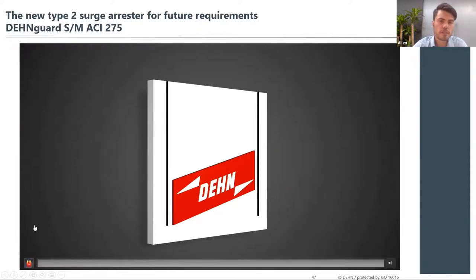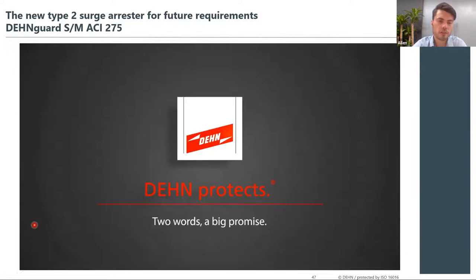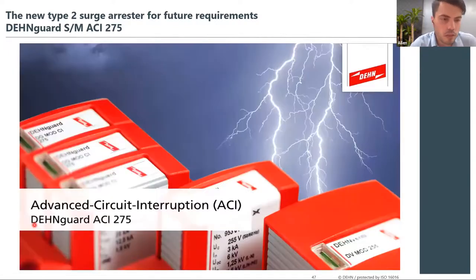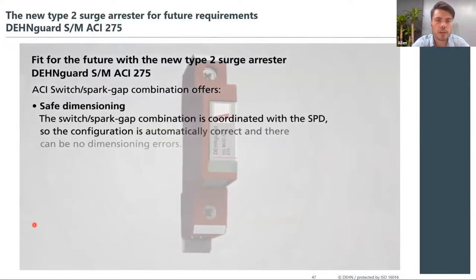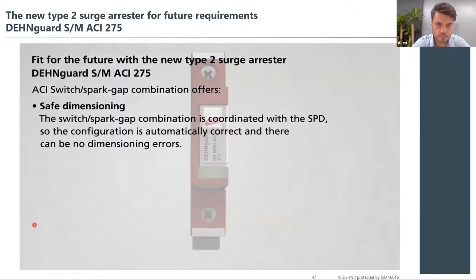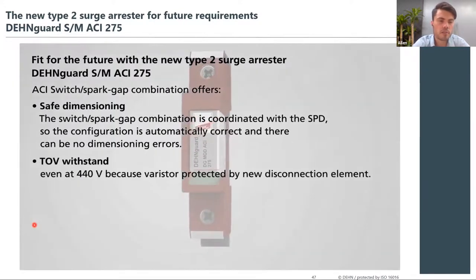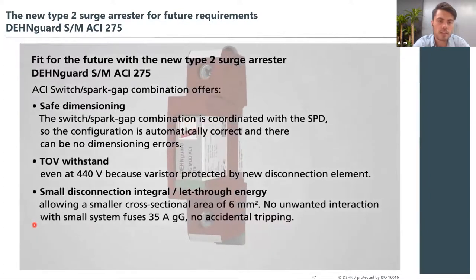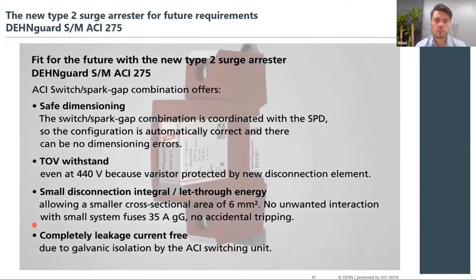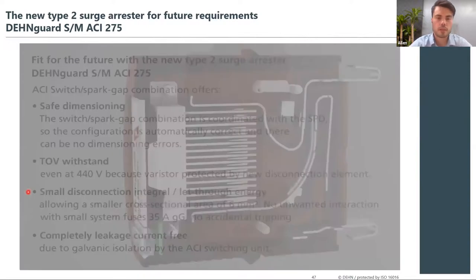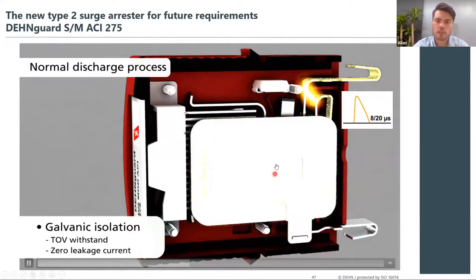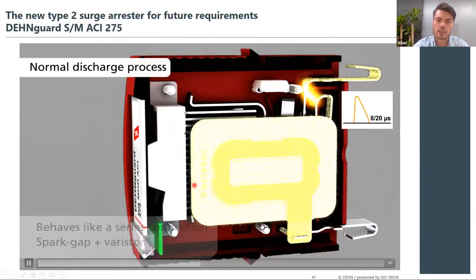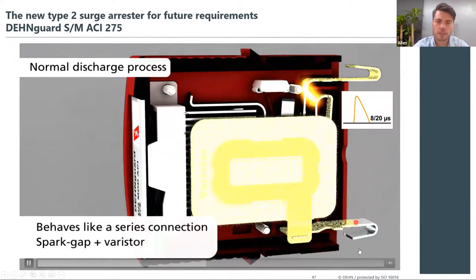A video shows how the ACI technology works during a fault condition. The DEN GUARD is our Type 2 surge protection device. The new switch spark gap technology provides safe dimensioning, higher temporary overvoltage withstand capabilities, and small lead-through energy. With an 8/20 current injected, an arc is generated, moves through the new arcing chambers, extinguishes, and directs energy to ground. In a fault condition with a short circuit, it can interrupt the short circuit and disconnect the SPD when overstressed.